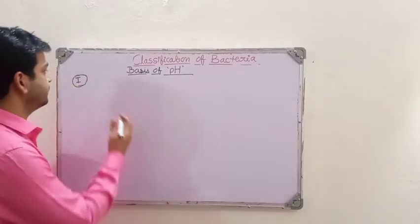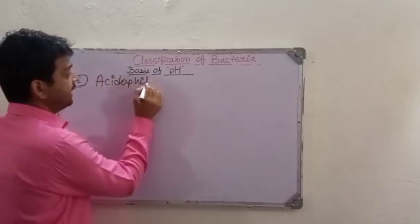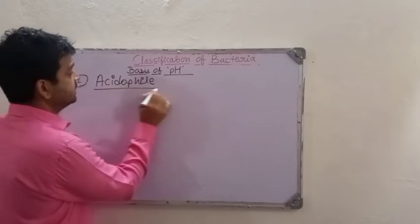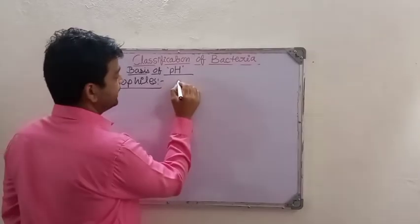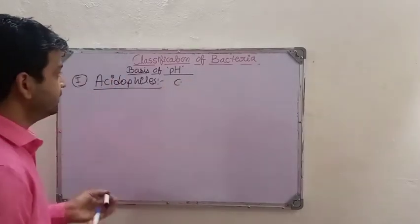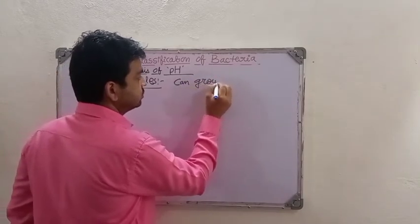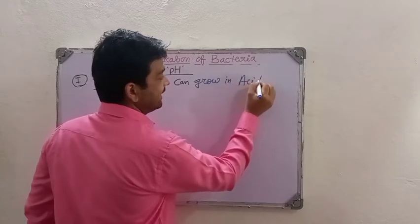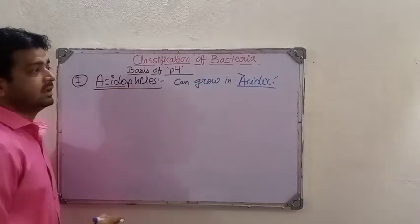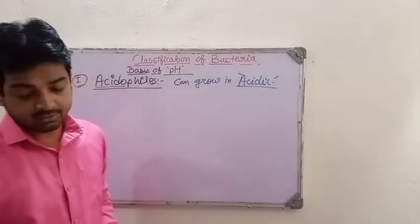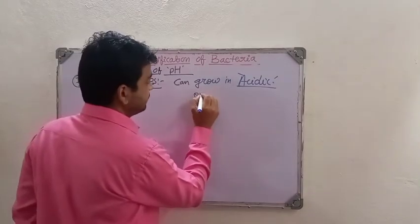The first type of bacteria we can see here are acidophiles. As the name indicates, acidophiles means they grow in an acidic environment — they can grow in acidic nature or in acid. The example we can write here for acidophiles is Thiobacillus thiooxidans.